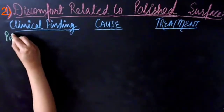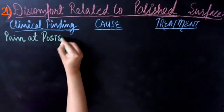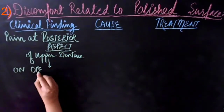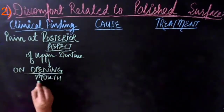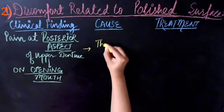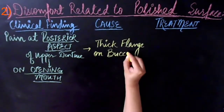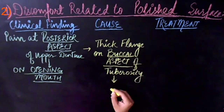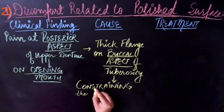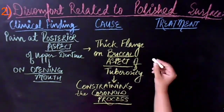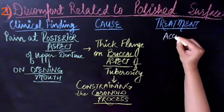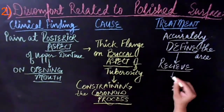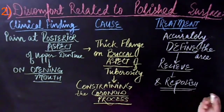Next is discomfort related to the polished surface of the denture. The patient generally complains of pain at the posterior aspect of the upper denture during opening of the mouth. This pain may be due to a too-thick flange on the buccal aspect of the tuberosity, which constrains the coronoid process during mouth opening. In this case, it is advised to accurately define the area using a disclosing material, relieve it, and then repolish.